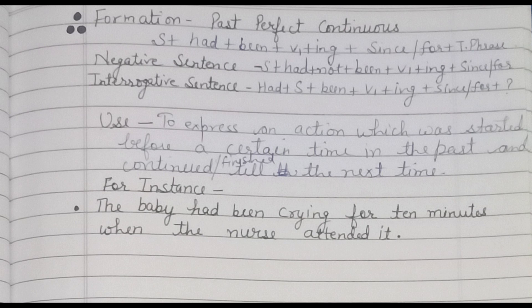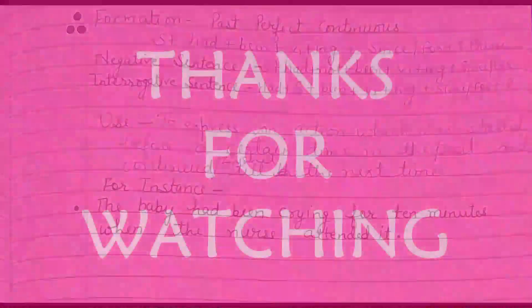Use of this tense: to express an action which was started before a certain time in the past — us action ko represent karta hai jo start hua, past ke nishchit samay se pehle, and continued or finished till the next mentioned time. Ya to continue ho ya finish ho, agla samay jo mention karake us tak. For instance: 'The baby had been crying for 10 minutes when the nurse attended it.'